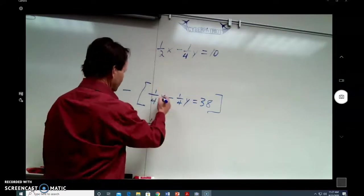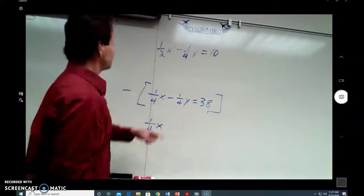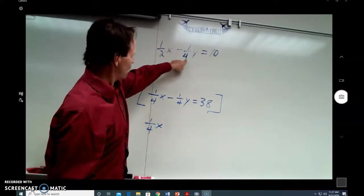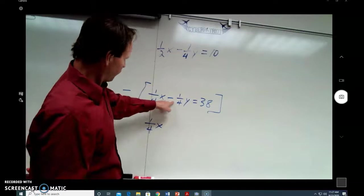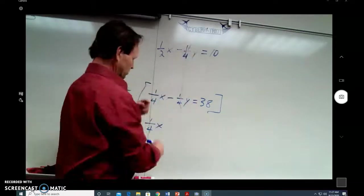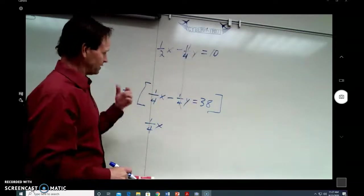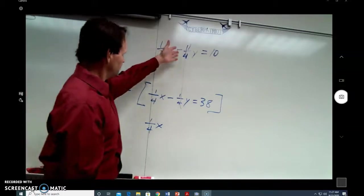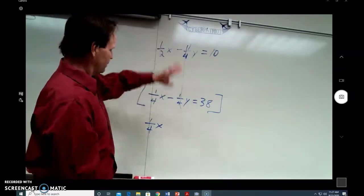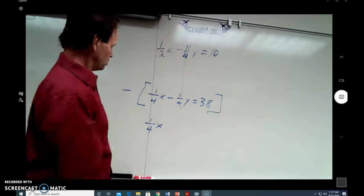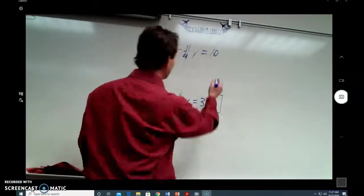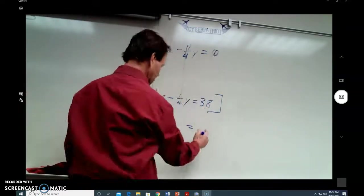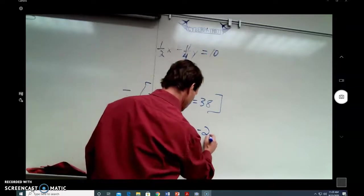So, 1 half x minus 1 fourth x is 1 fourth x. Negative 1 fourth y minus a negative 1 fourth y cancels. Negative 1 fourth minus a negative 1 fourth. Remember, subtracting a negative is like adding. That equals nothing. So, now I've got, and then equals, 10 minus 38 equals negative 28.